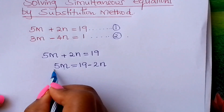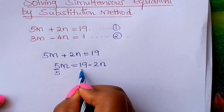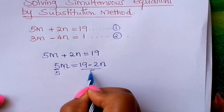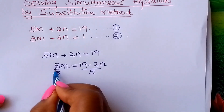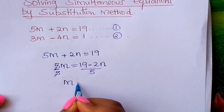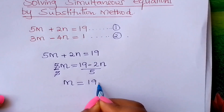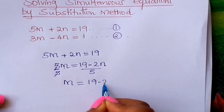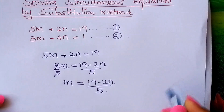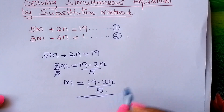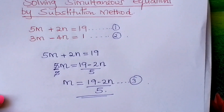By dropping this 5 — divide both sides by 5. So that and that will cancel out. Therefore m equals 19 minus 2n over 5. Call this equation 3.